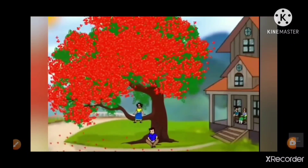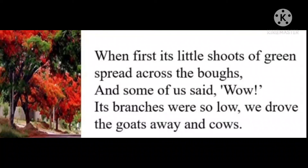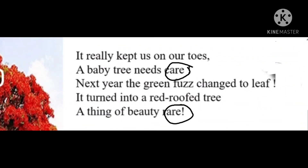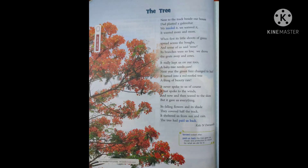The poet has beautifully created imagery in this poem. As you read each line — 'next to the track,' 'beside our house' — an image is created in your mind. Let's talk about rhyming words: boughs and cows have the same sound, care and rare again rhyme, and track and back also rhyme. Read the whole poem again and enjoy it. I hope you will enjoy it!